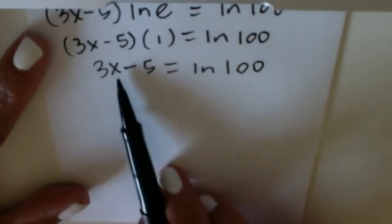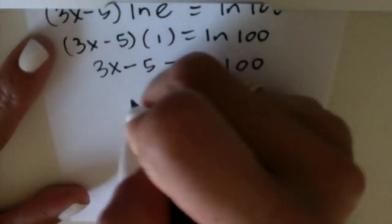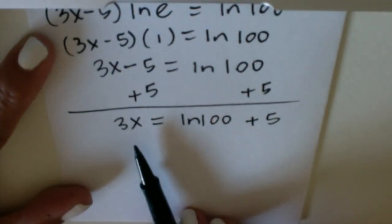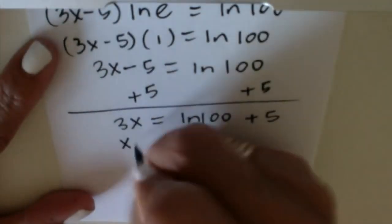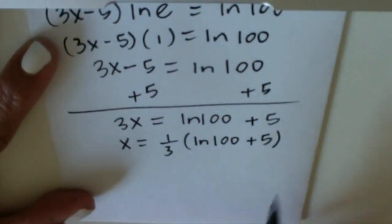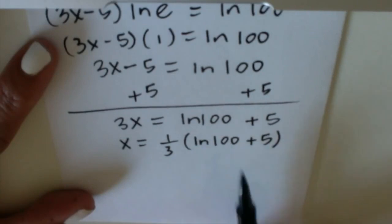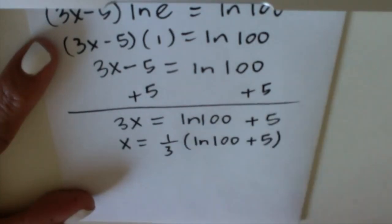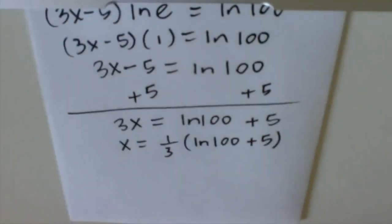So at this point, we're just going to isolate the x. We're going to go ahead and add 5. And finally, we're going to divide both sides by 3. Make sure you don't add these together because it's natural log of 100, then plus 5. So just leave it like this. And then again, we're going to get a decimal for this.